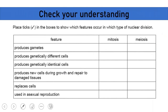Let's check your understanding. Place a tick to show which features occur in which type of nuclear division. Produces gametes — meiosis. Produces genetically different cells — meiosis. Produces genetically identical cells — mitosis. Produces new cells during growth and repair of damaged tissue — mitosis. Replaces cells — mitosis. Used in asexual reproduction — mitosis. Thank you for watching; subscribe for more videos and watch part two in another video.